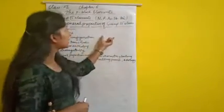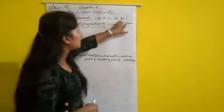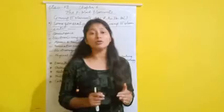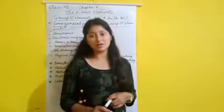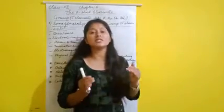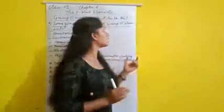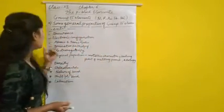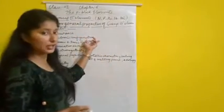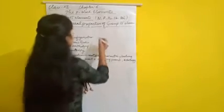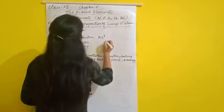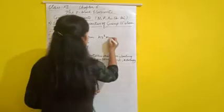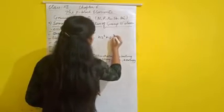Moving to the occurrence of Arsenic, Antimony, and Bismuth — these elements are found mainly in sulfide minerals. Then moving to the electronic configuration: the electronic configuration for group 15 elements is ns2, np3.